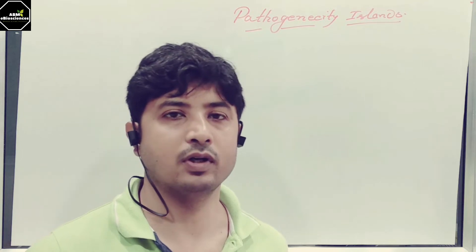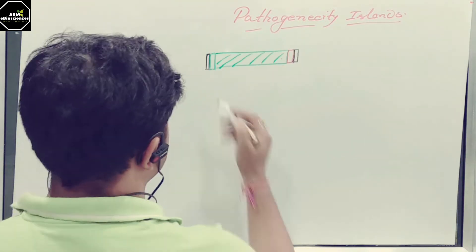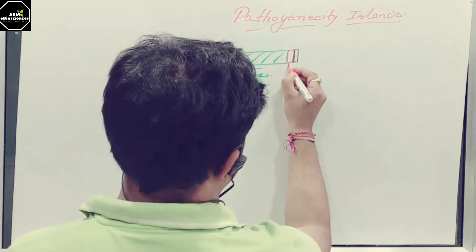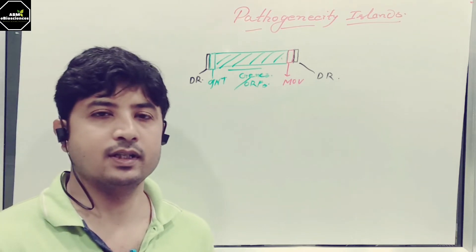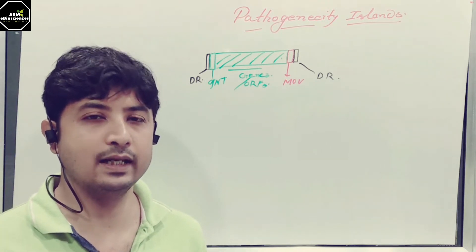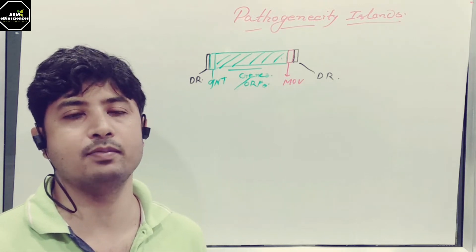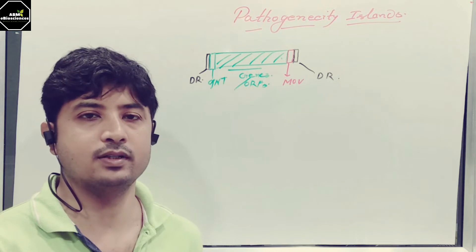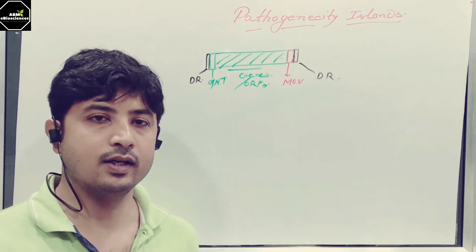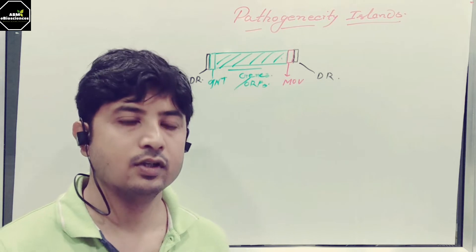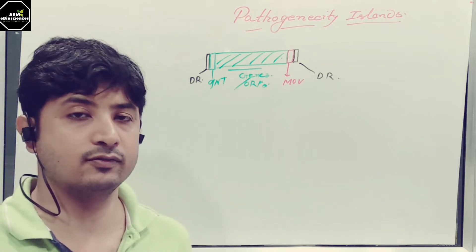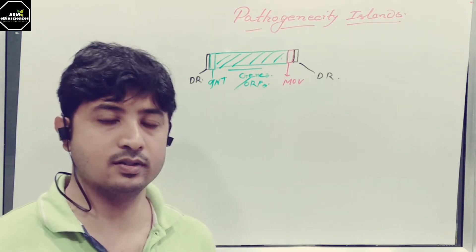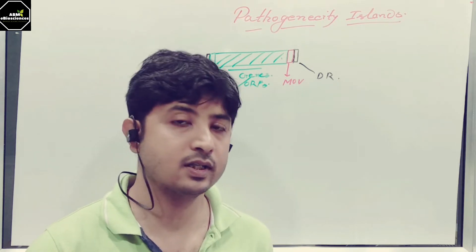First I'll go through a picture which will help you understand what Pathogenicity Islands are. This is a typical picture of a Pathogenicity Island. It's a mobile genetic element which can be transmitted from one bacteria to another bacteria through horizontal transfer. Horizontal transfer — conjugation, transformation, and transduction — are a few means of horizontal transfer of genetic material from one bacteria to another.